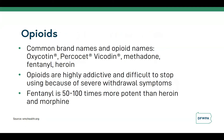Heroin is the only illicit drug listed on this opioid slide. The body adapts to continued opioid use — regular use no longer creates euphoria, and the body needs more and more of the drug to maintain normalcy. If the person cannot procure the drug, withdrawal begins and is quite uncomfortable.